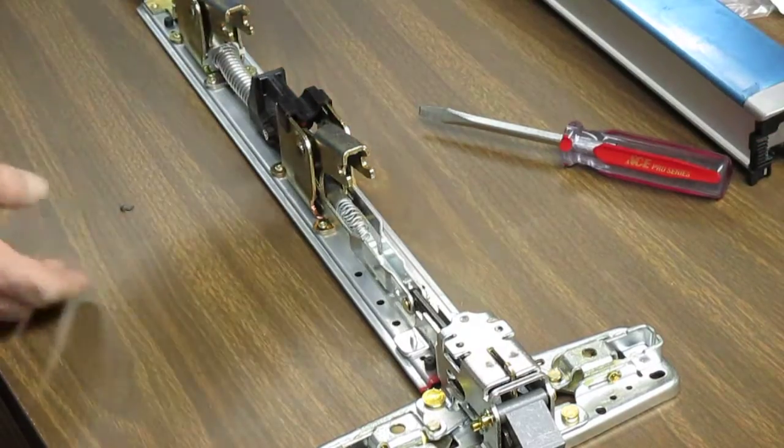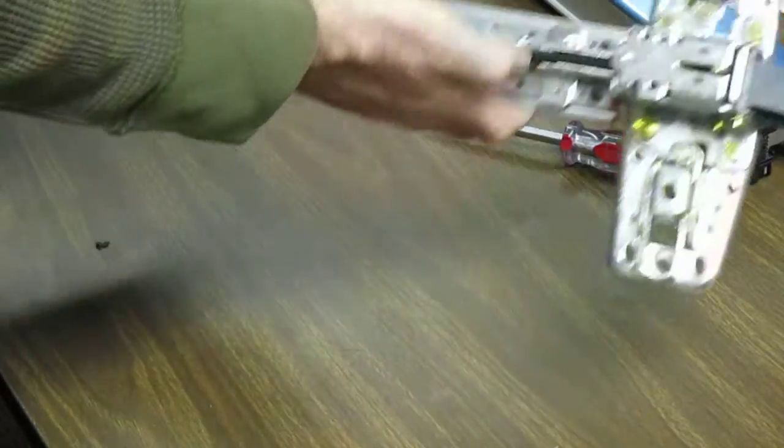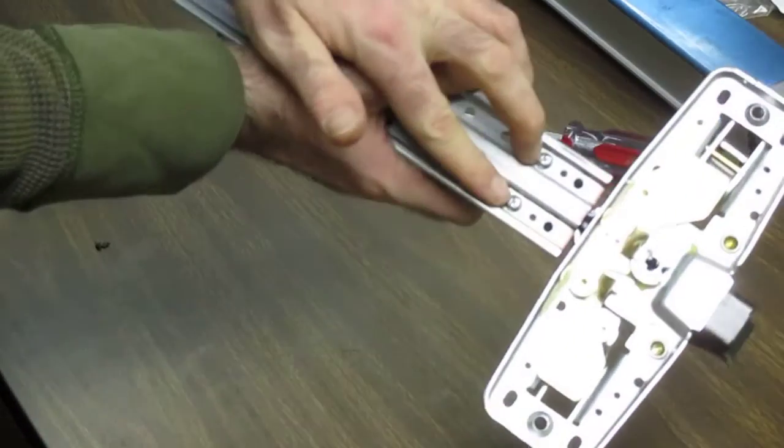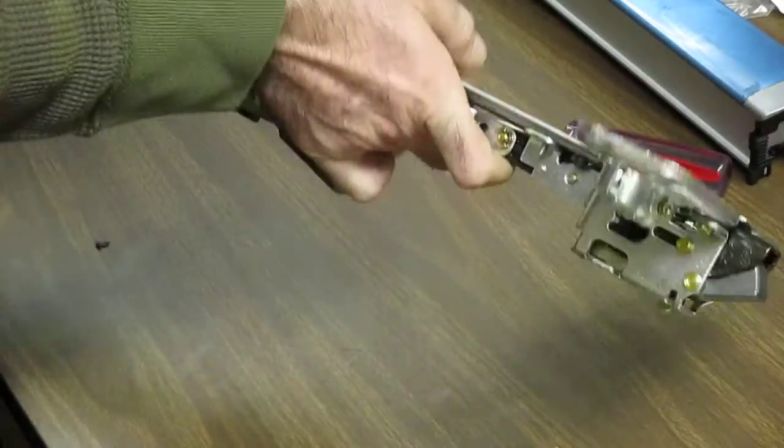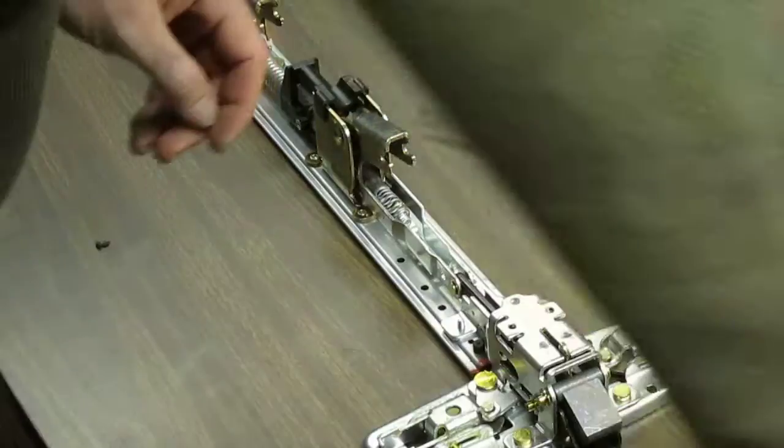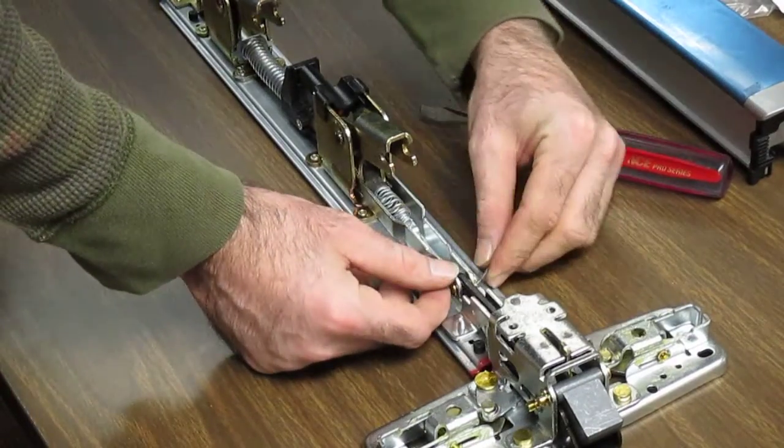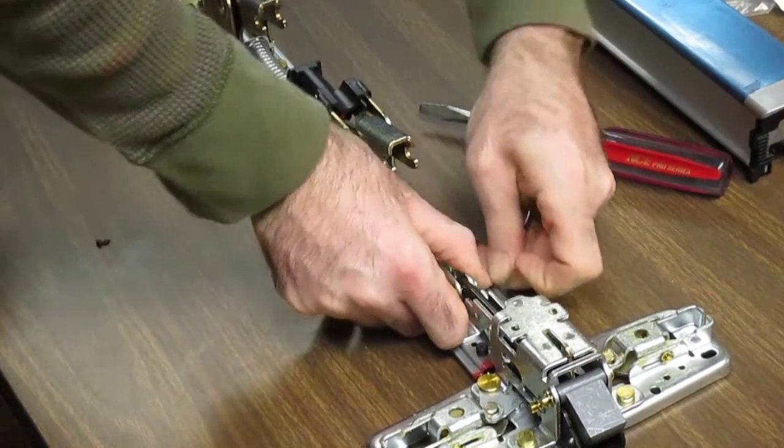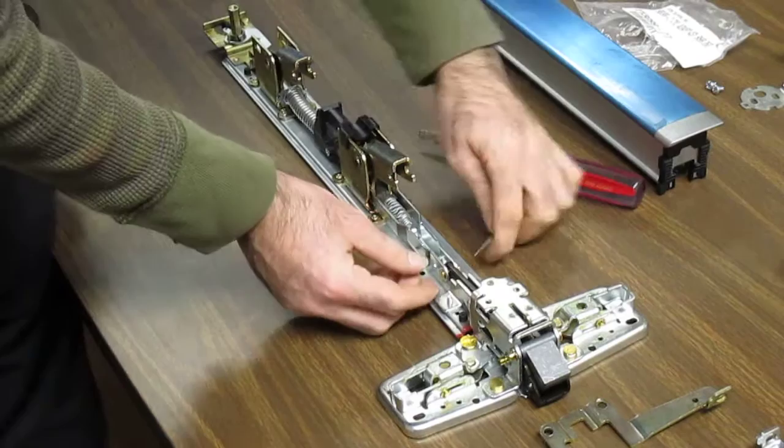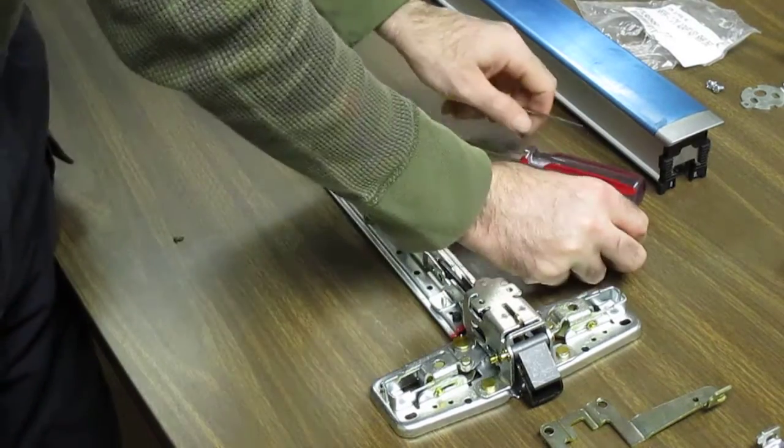Once you get that lifted away, you're left with this C-clip here and these two screws here that hold this to the bar itself. So to remove the C-clip, I just use a little pick and that slides right off. You can take the roll pin out.